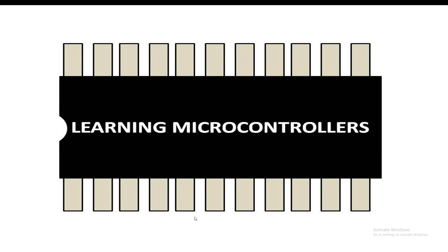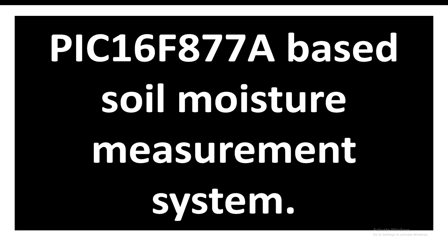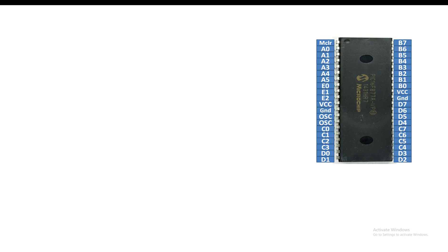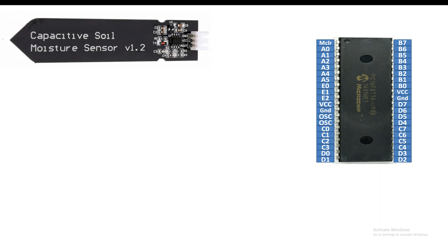Hello guys, welcome to Learning Microcontrollers. In this video I'm going to show you how to make a soil moisture measurement - or soil moisture detection system - using the PIC16F877A and a cheap capacitive soil moisture sensor. Let's get started. This is our PIC16F877A having 40 pins in DIP version, and this is the capacitive soil moisture detection sensor. It's easily available in the market and very cheap.